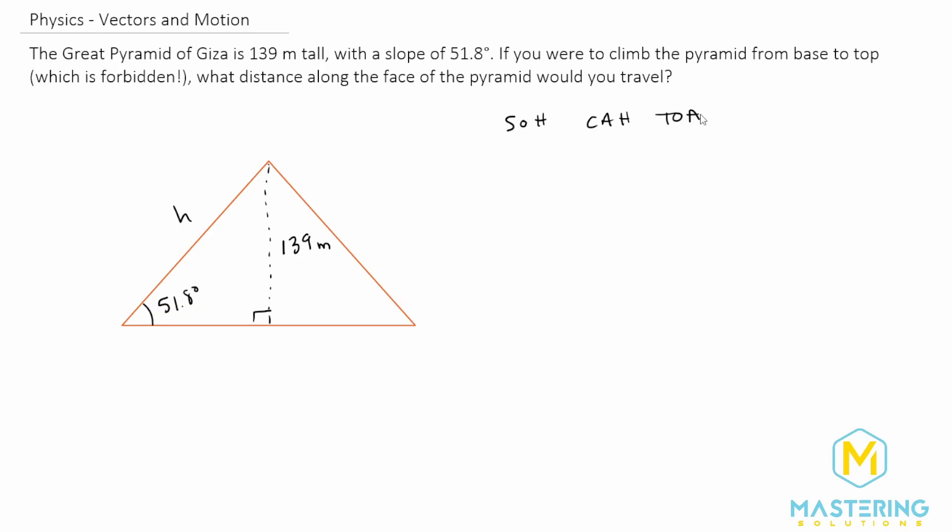SOHCAHTOA, and we have the opposite of the angle, and we want the hypotenuse, so we'll be using sine. So SOH stands for sine of theta is equal to the opposite over the hypotenuse.